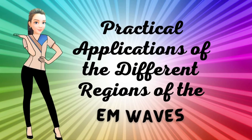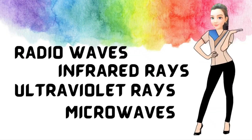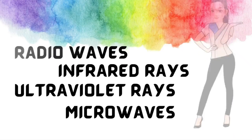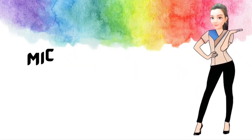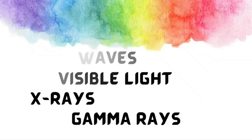As a review, we have the different types of electromagnetic waves. We have the radio waves, infrared rays, ultraviolet rays, microwaves, visible light, X-rays, and gamma rays.